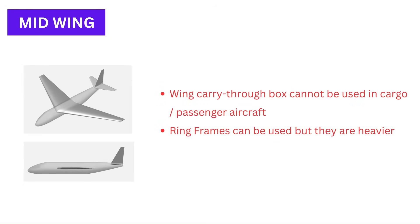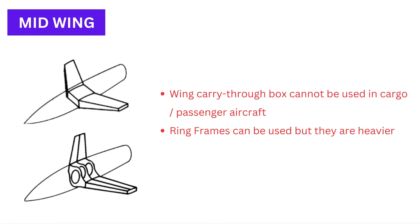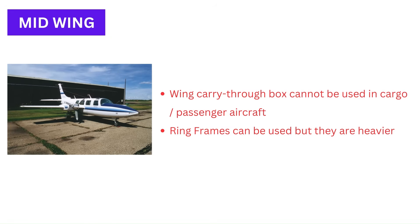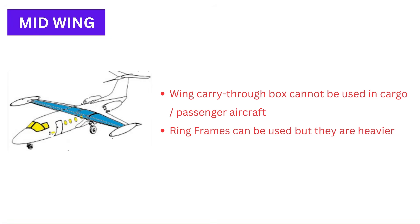The major disadvantage of mid-wing design is that the wing carry-through box cannot be used in cargo or passenger planes. The wing carry-through box is usually lighter than other structural solutions like ring frames. In spite of this, the configuration has been used in a few aircraft, for instance the 10-passenger Westwind business jet and the 6-seat Piper Aerostar. Another exception is the Hansa jet, which has forward sweep to compensate for the placement of the mid-wing in the aft part of the fuselage.